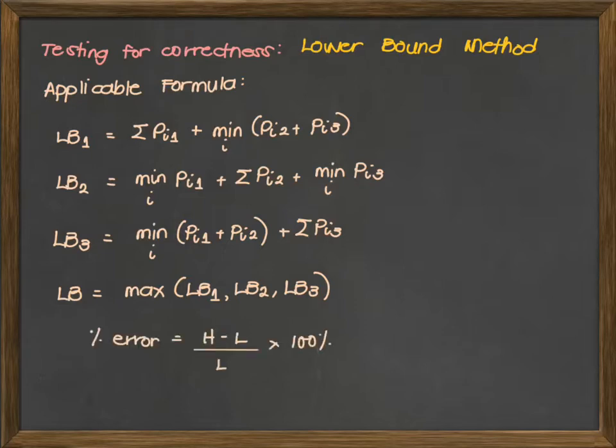For the percentage error, we compute it using the formula H minus L all over L then multiplied by 100. Where H is the heuristic value that we have attained or computed using Palmer's rule and L is the lower bound value.